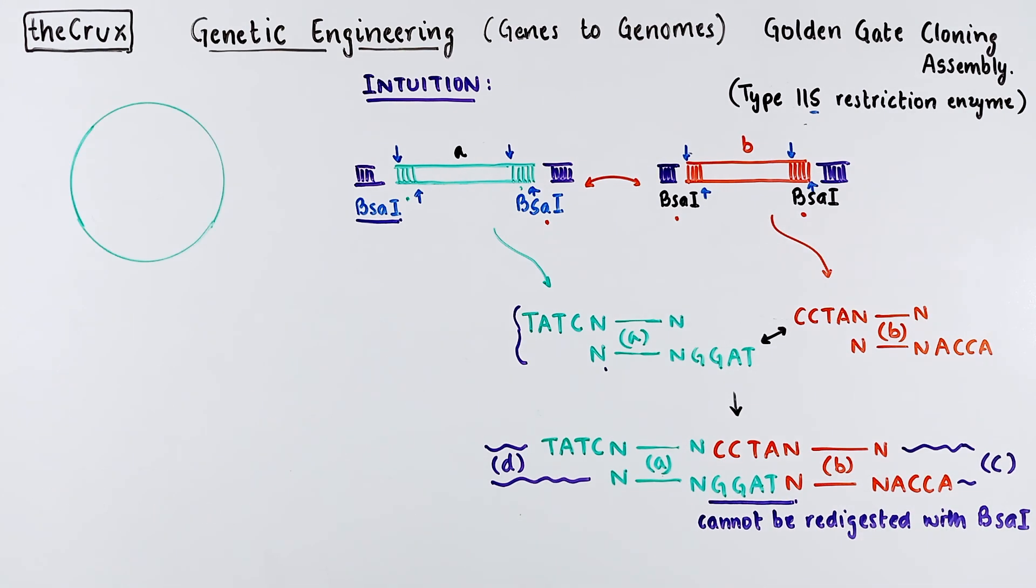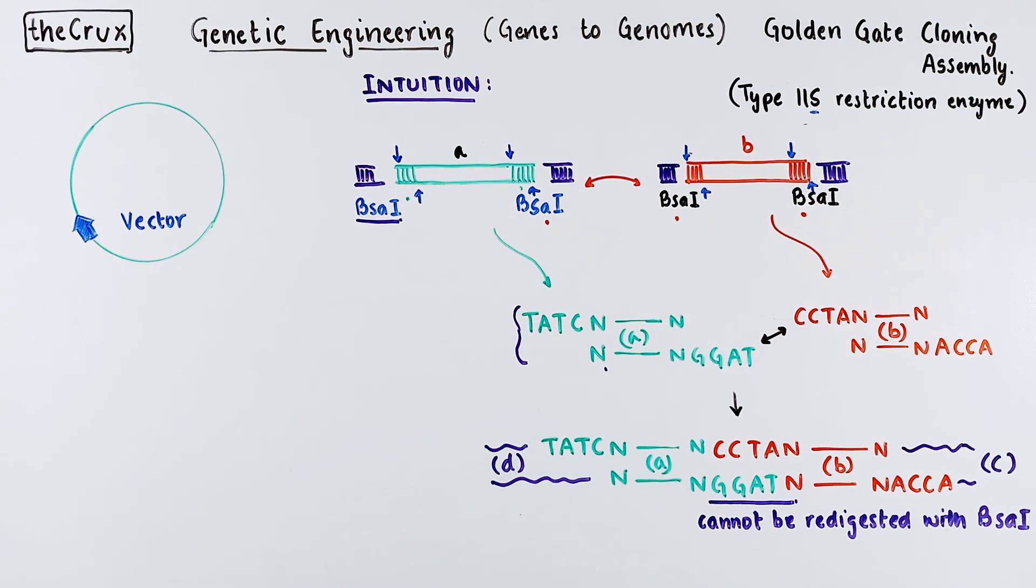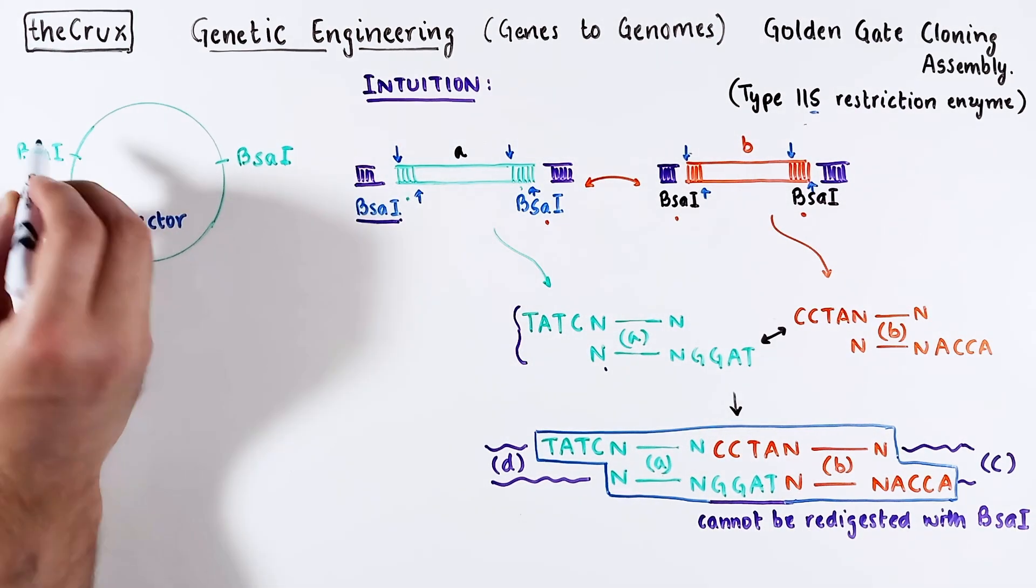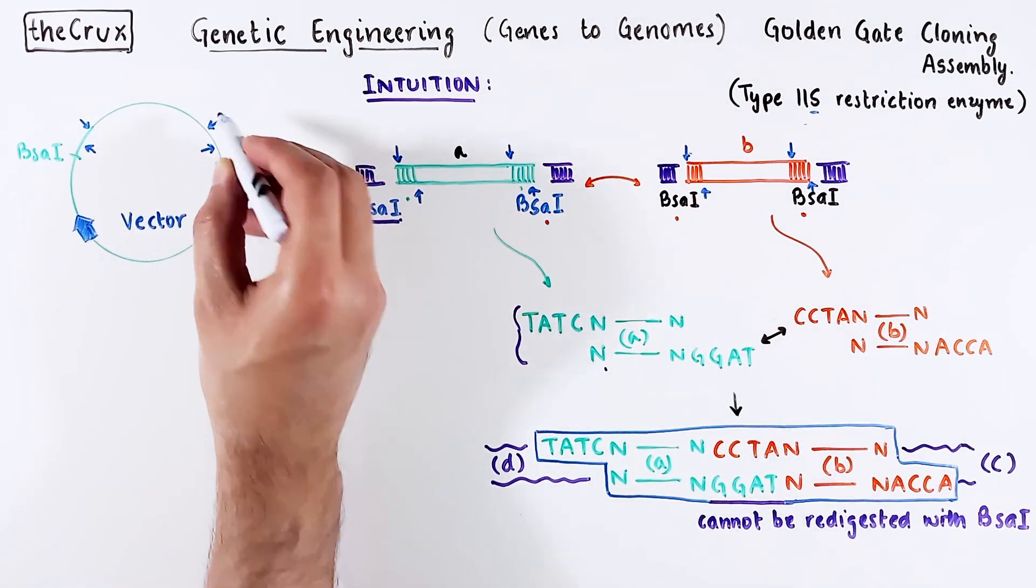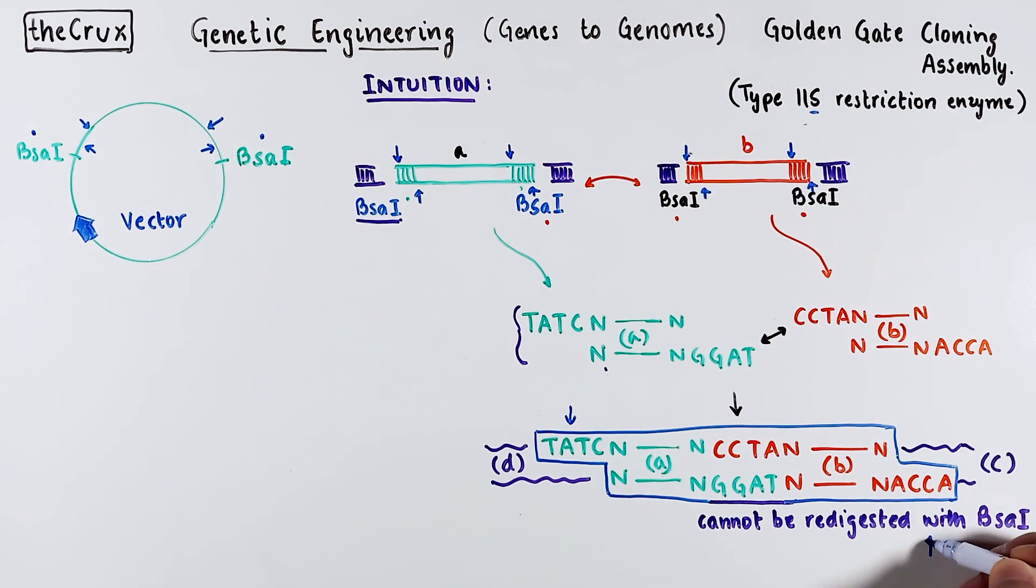Now let's think about the vector, and say that we're trying to insert this A and B combination into the vector. The simplest way is to have compatible BSA1 sites in the vector. After digestion, you get a vector with sticky overhangs that must be compatible with the insert sticky ends.